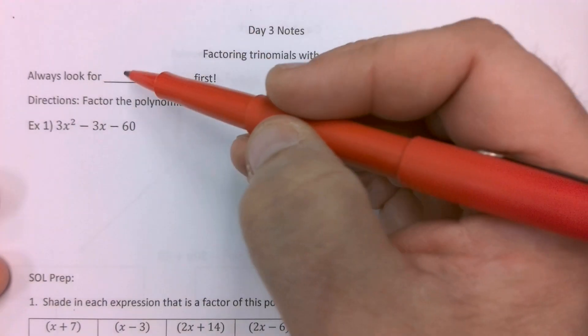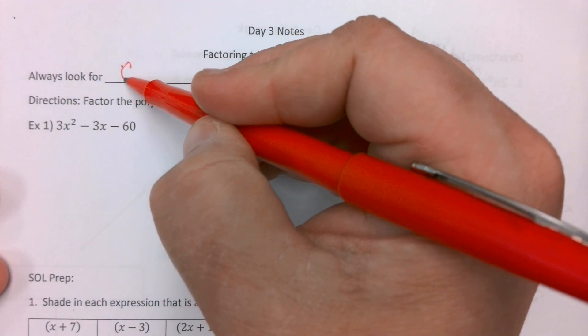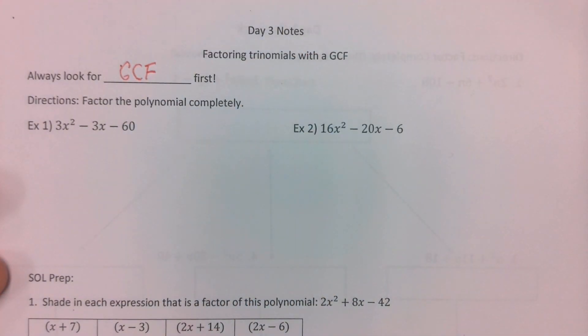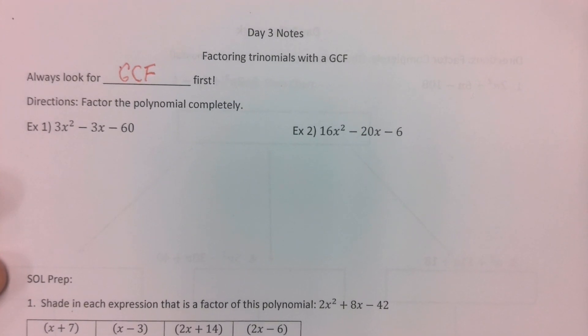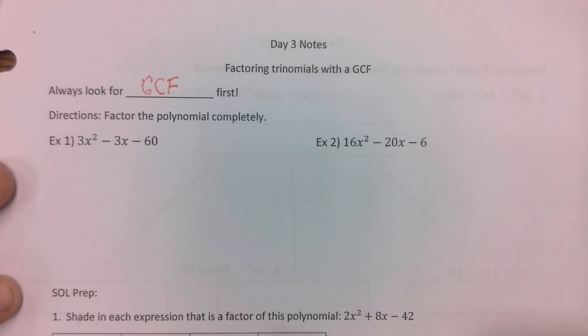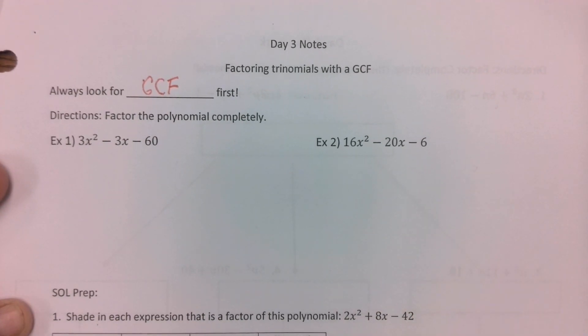So just as a reminder, we should always look for our GCF first and that's the only part that's new today. Last class we talked about how to factor trinomials, so for today all you're doing that is extra is we're adding an extra step of checking to see if there's something you can take out at the beginning.